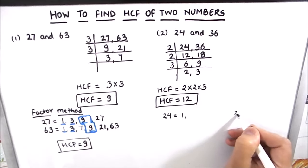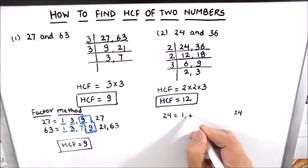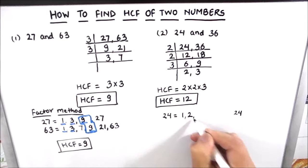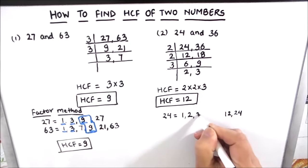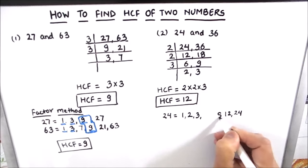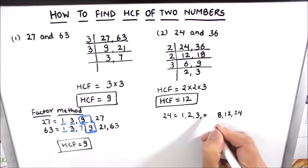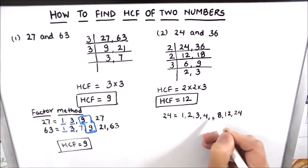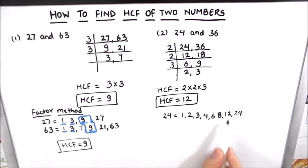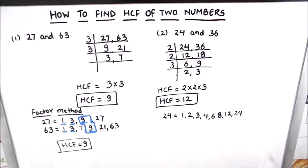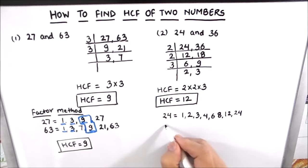Now for 24: 1 times 24, 2 times 12, 3 times 8, and 4 times 6. So the factors of 24 are 1, 2, 3, 4, 6, 8, 12, and 24. We have written all the factors of 24. Let us now write the factors of 36.